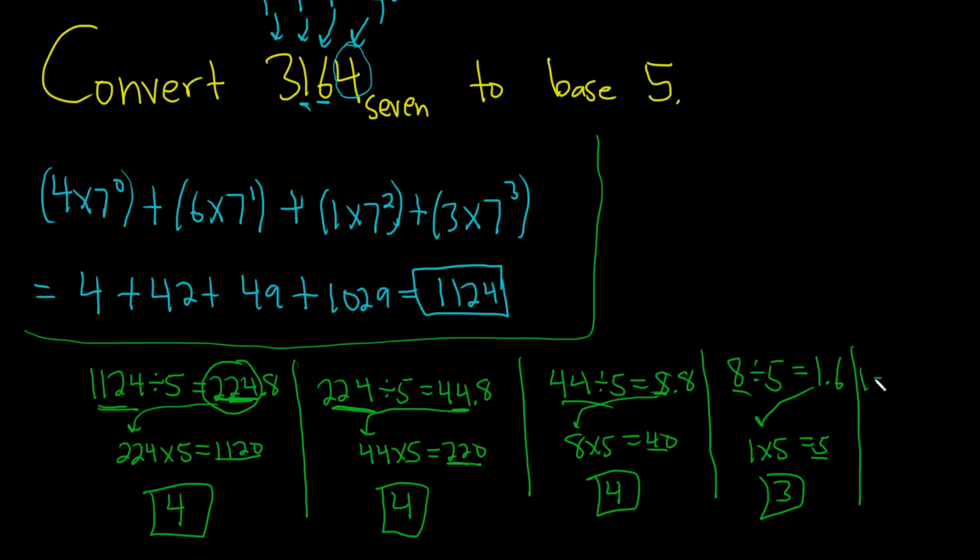So you take the 1, divide it by 5. This is going to be 1 divided by 5 is 0.2. So you take the 0, multiply it by 5, you get 0. 1 minus 0 is 1, remainder is 1.